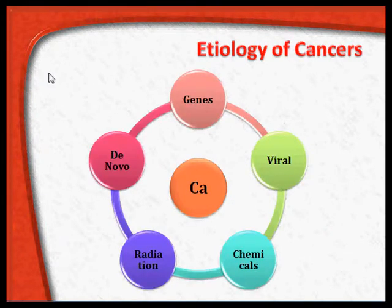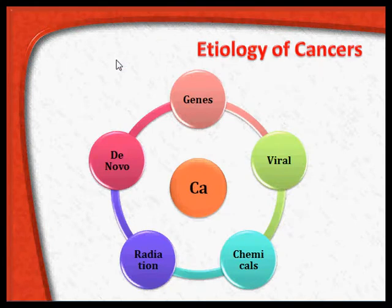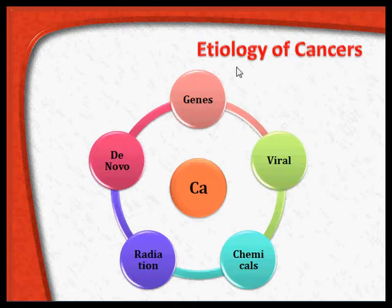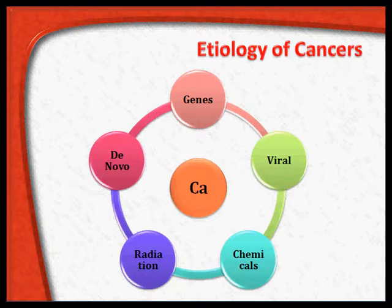We all understand that there is no single etiological agent for cancer, just like for infectious diseases. Cancer is multifactorial. Fundamentally, there are what are called oncogenes. There is a genetic predisposition in some individuals due to genetic mutations occurring in previous generations which are being carried into the next generations, and those genetic abnormalities will result in tumour formation.